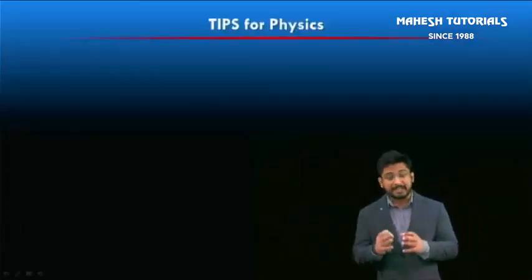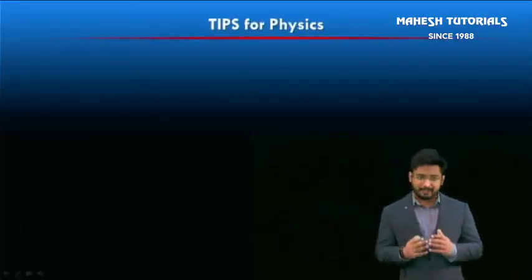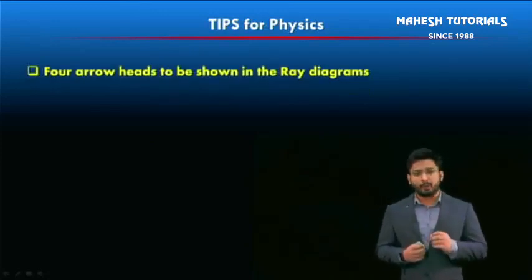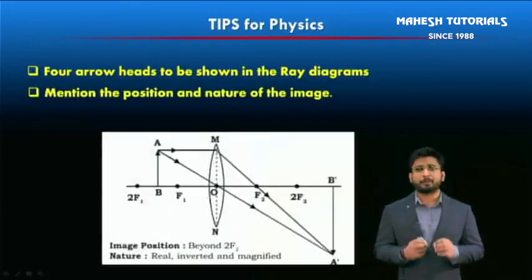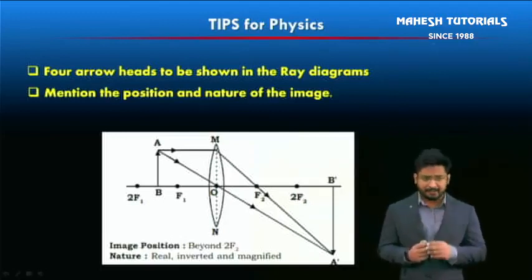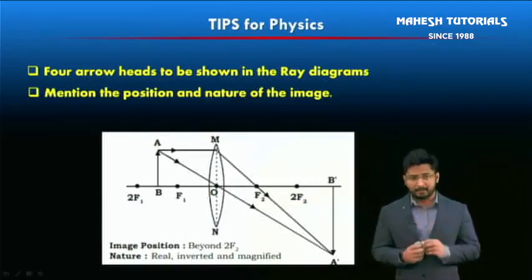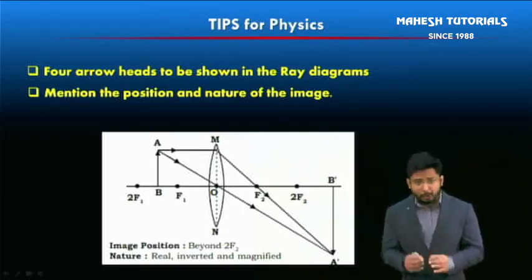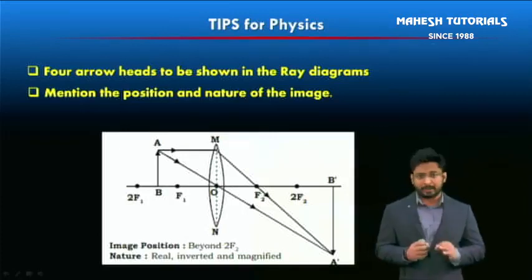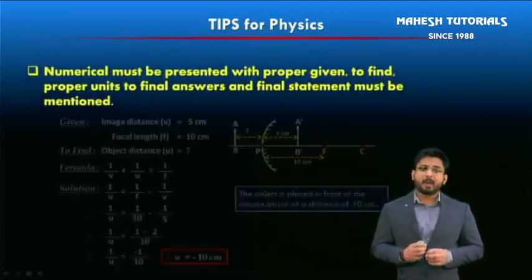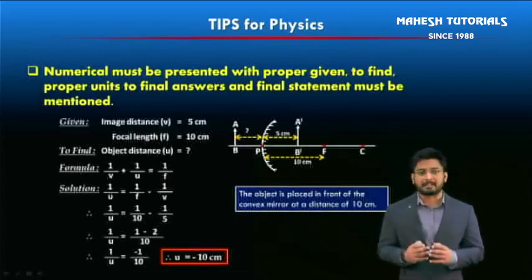Now let's talk about how to maximize your score in physics. When solving questions based on ray diagrams, make sure four arrowheads are present — two along the incident rays and two along the refracted or reflected rays, depending on whether it is a lens or a mirror. The first thing the examiner will look for are the arrowheads. After the ray diagram, always mention the position and the nature of the image below it.